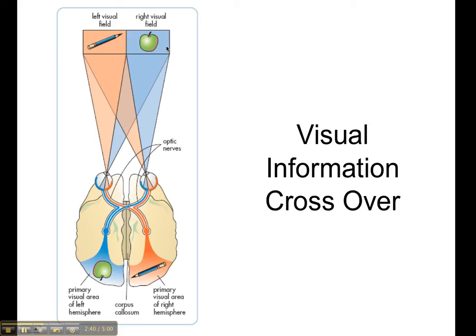The reverse is true for the right visual field. If you're looking at the right visual field, that information actually hits the left side of both of the retinas, and then it's transmitted to the left visual area, the visual cortex of the brain.